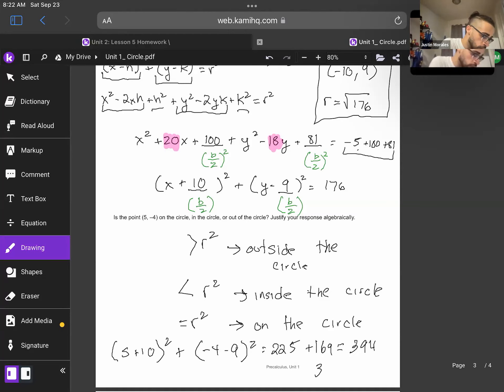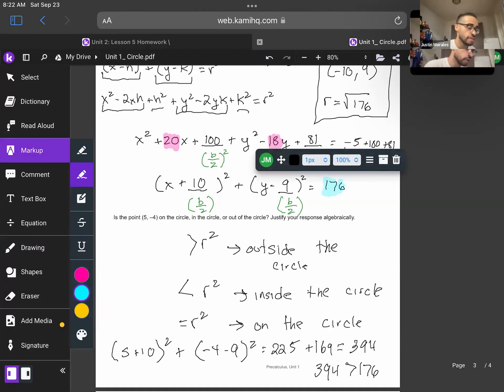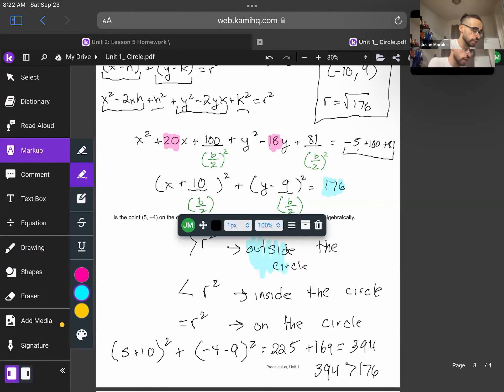And because 394 is greater than 176, once again, our r² value is right here. That means we are going to be outside of the circle. And that is how we answer that problem. So those are going to be our two model problems for today.